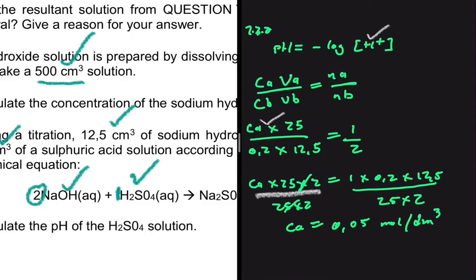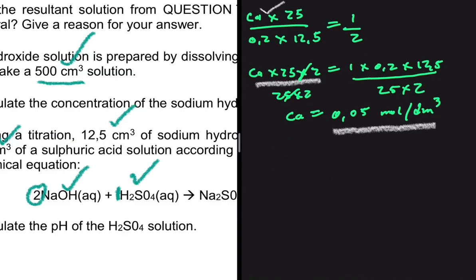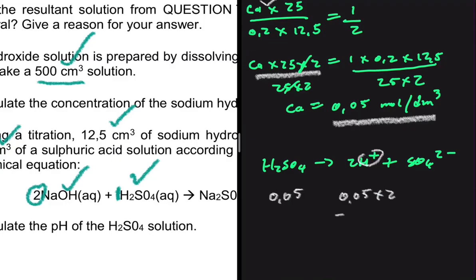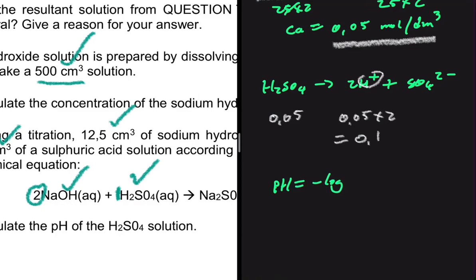We have the concentration of H2SO4, but we need [H+]. Since H2SO4 → 2H+ + SO4²⁻, if [H2SO4] = 0.05, then [H+] = 0.05 × 2 = 0.1 mol·dm⁻³. Therefore pH = −log(0.1) = 1.